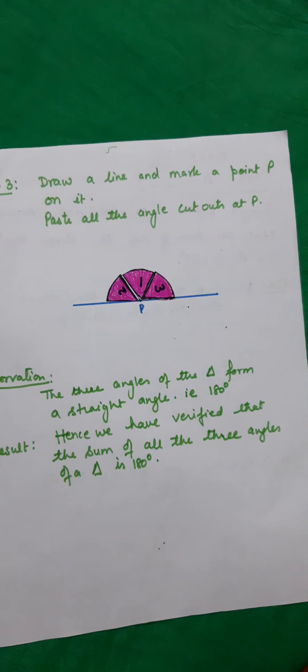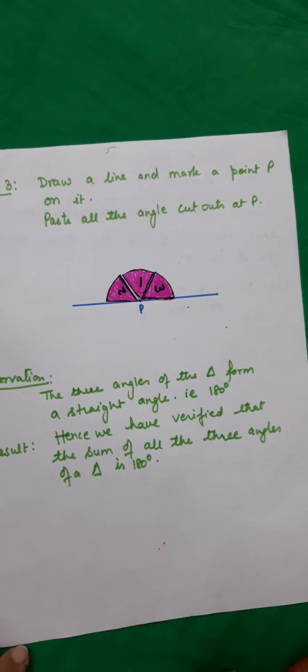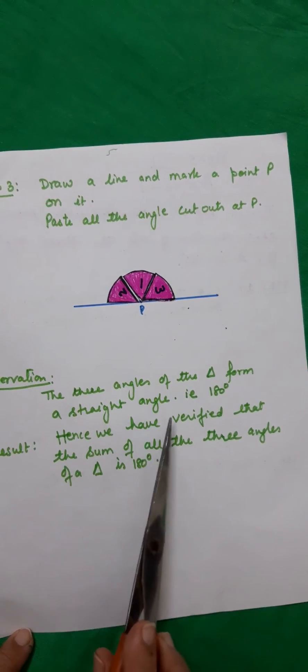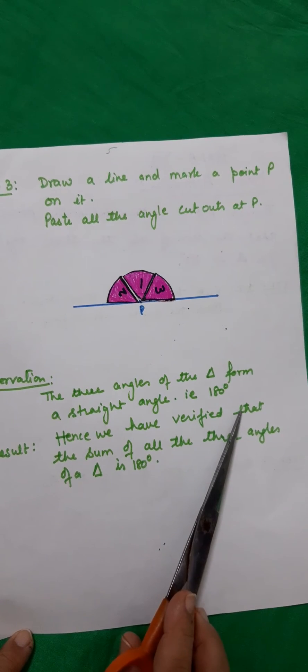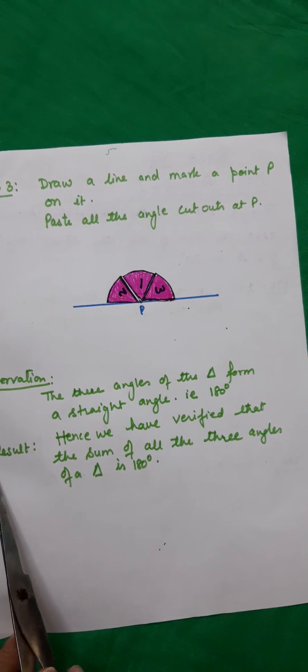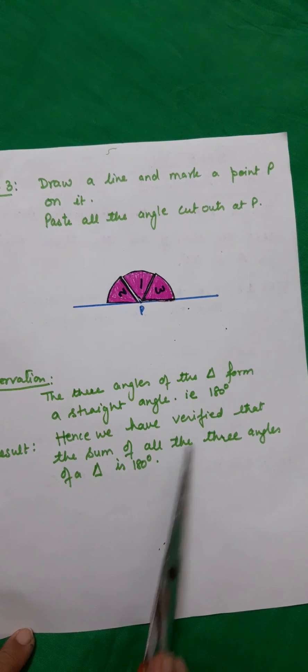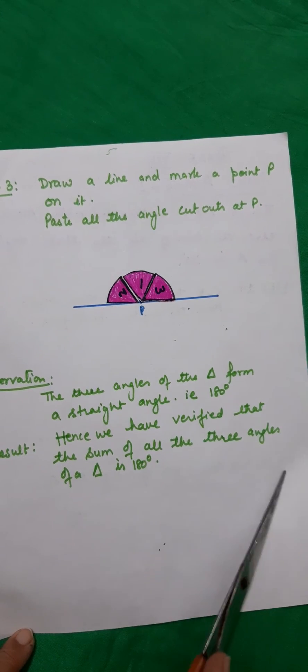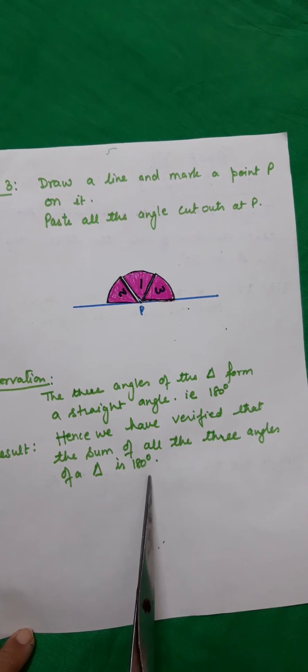I notice that these three angles of the triangle form a straight angle, that is 180 degrees. So what's the result? We have verified the sum of all three angles of a triangle is 180 degrees.